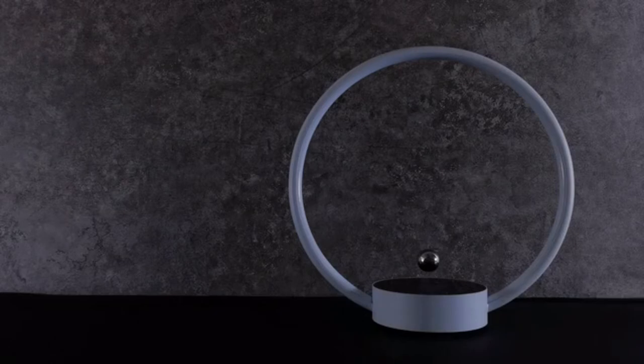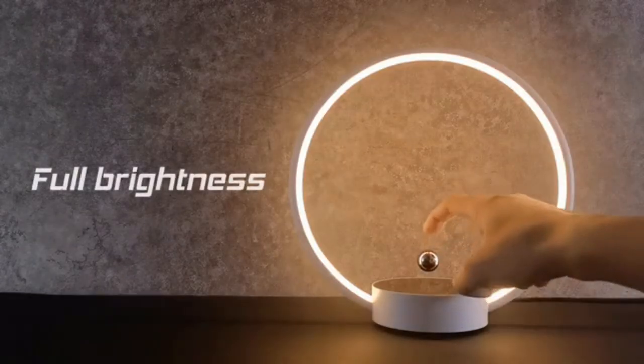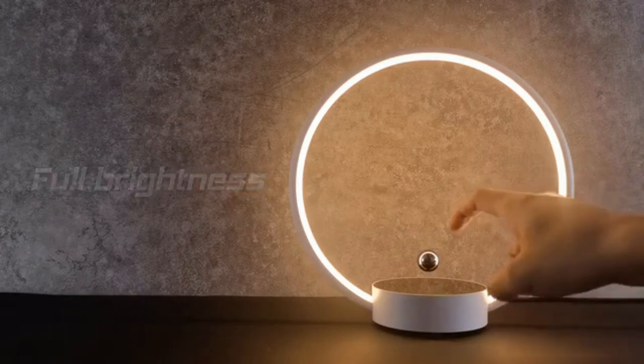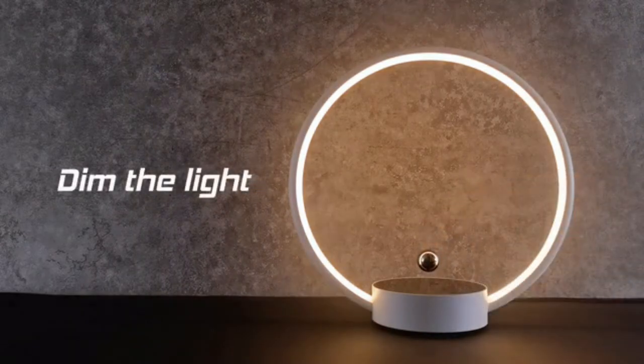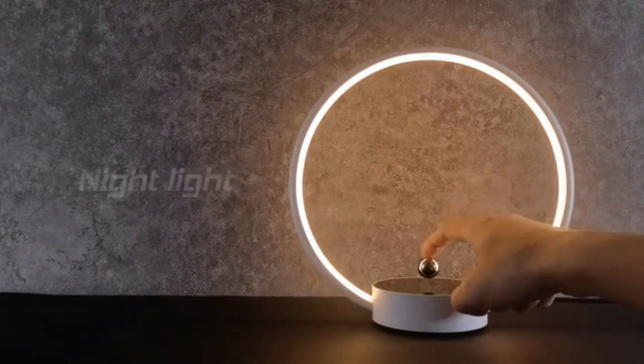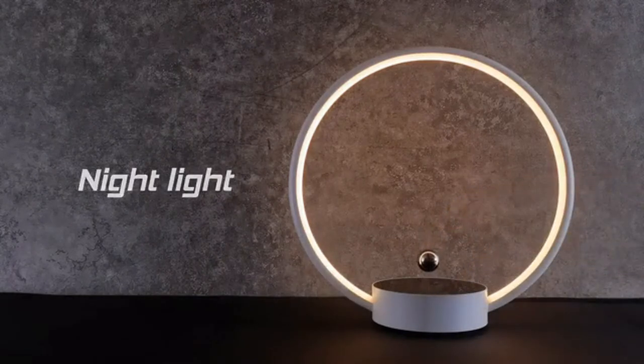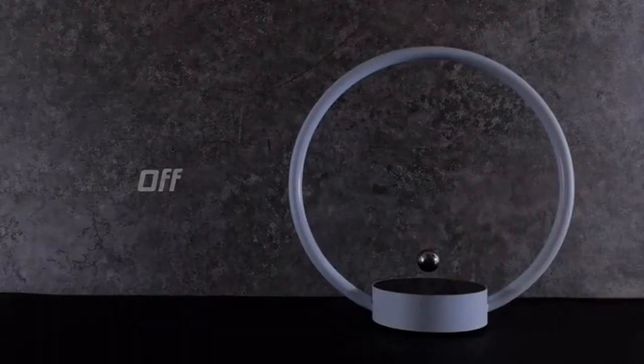Here is how the dimmable LED version works. Press once to turn on the light at full brightness. Press again to dim the light. Press again to turn on the night light mode. Press again to turn Cierclo off.